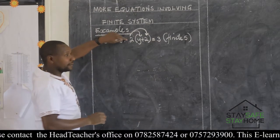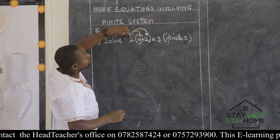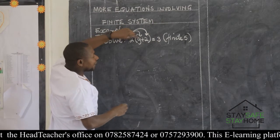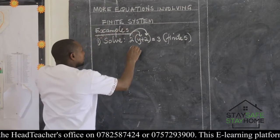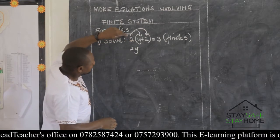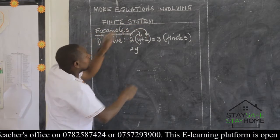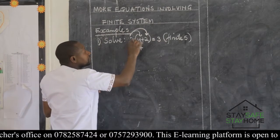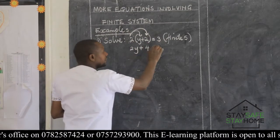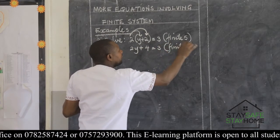How do we do that? As we learned in P6, this is 2 times y. 2 times y gives us 2y. Then we come back — this arrow is telling us that we say 2 times 2. Remember, the plus will remain. 2 times 2, we have 4. Then this will be equal to 3, and this is finite 5.